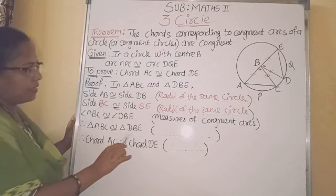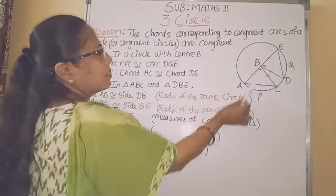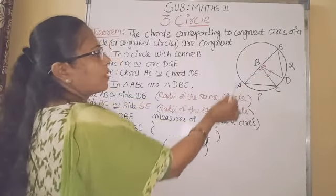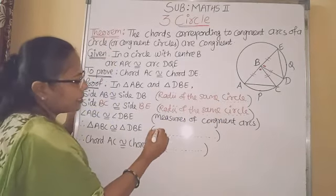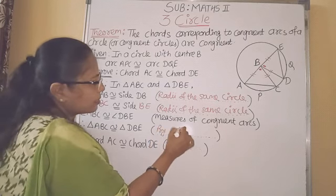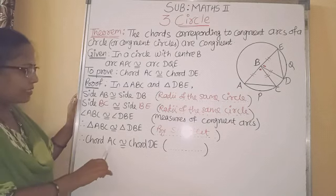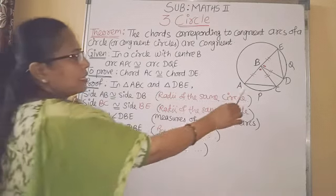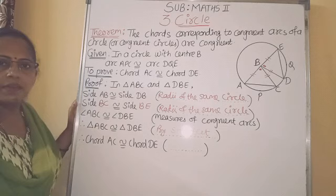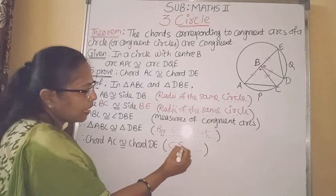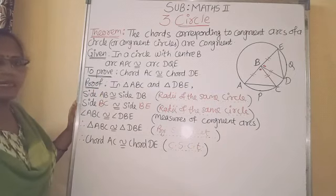Therefore, triangle ABC is congruent to triangle DBE. With the identical marks you can see that these two triangles are congruent by SAS. And therefore, chord AC is congruent to chord DE. The reason we write here is: corresponding sides of congruent triangles — CSCT.